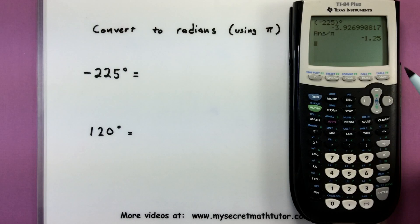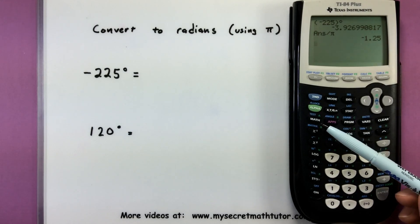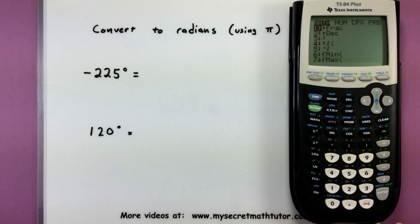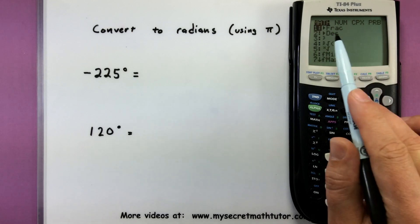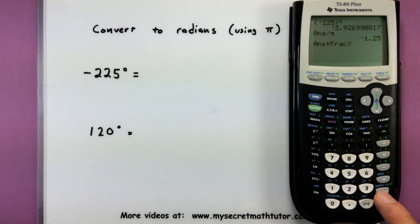And look at that. When I divided it by π, I got a nice terminating decimal. It stopped. This is a clue that it really is a fraction with π in it. What fraction is it? Well, now I can use my math button to convert this number into a fraction. That's my first option. And I see that it's negative 5 fourths.